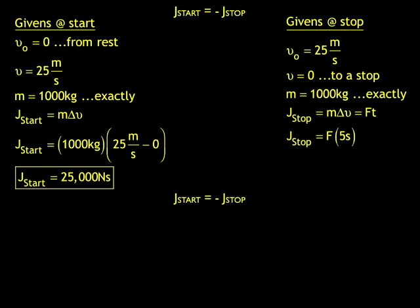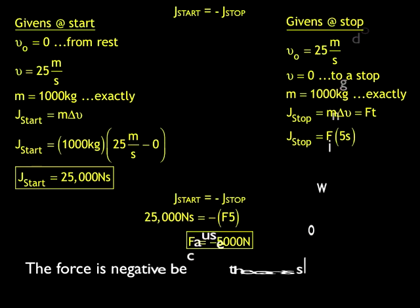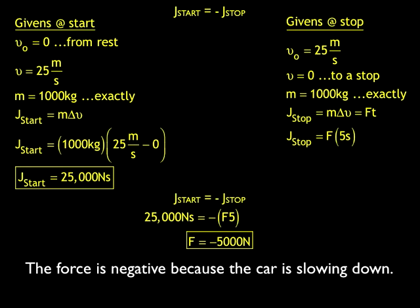Now what I'm going to do is take my concept of the impulse to start is equal and opposite the impulse to stop, and put in my numbers. So 25,000 Newton seconds is equal to negative force times 5 seconds. With this in mind, the final force is negative 5,000 Newtons. The force is negative because the car is slowing down.